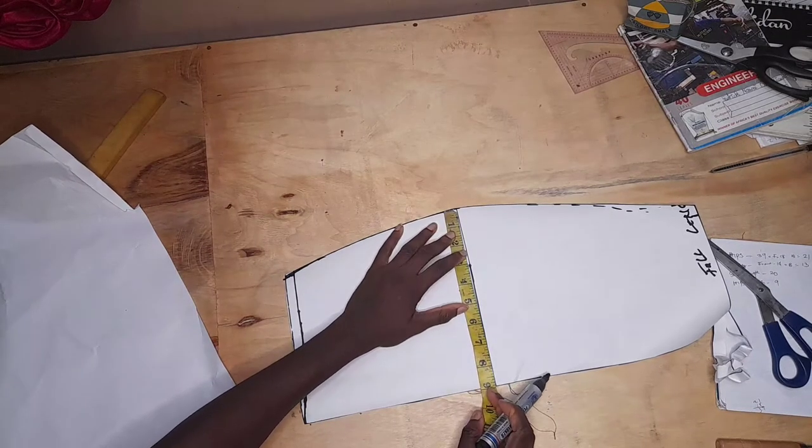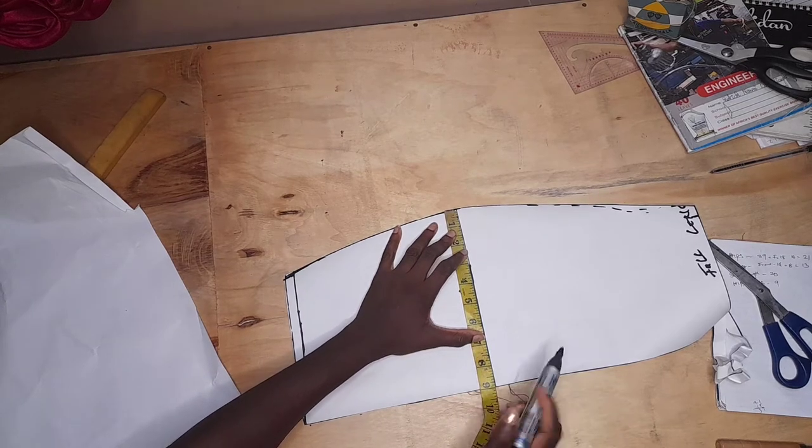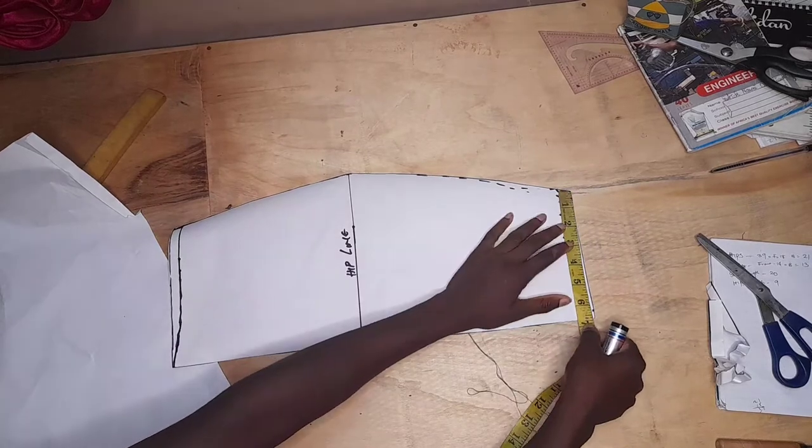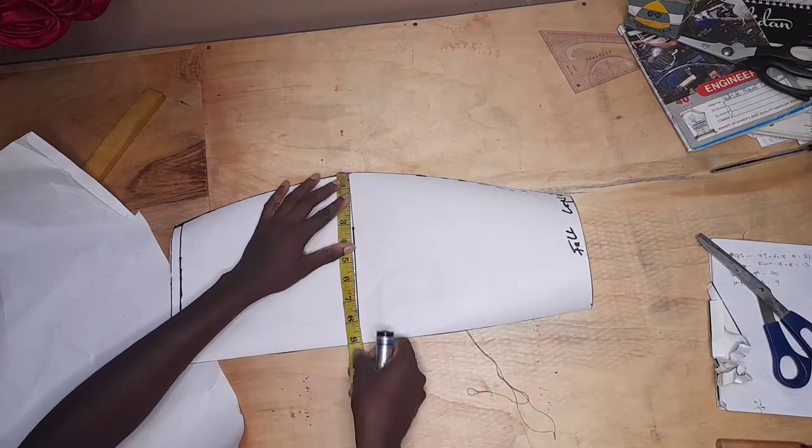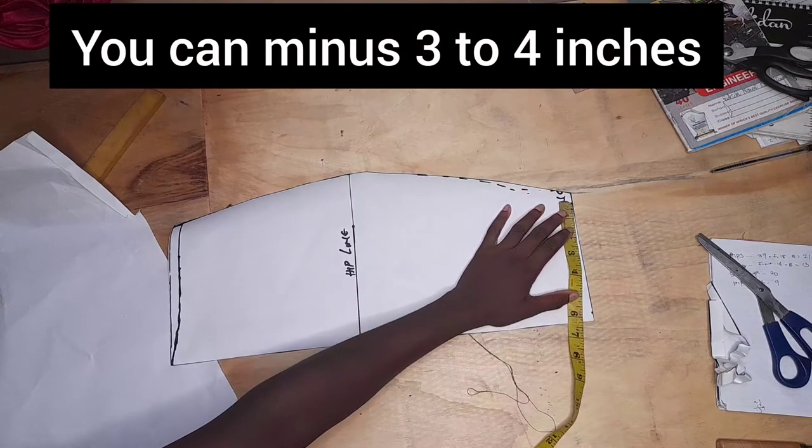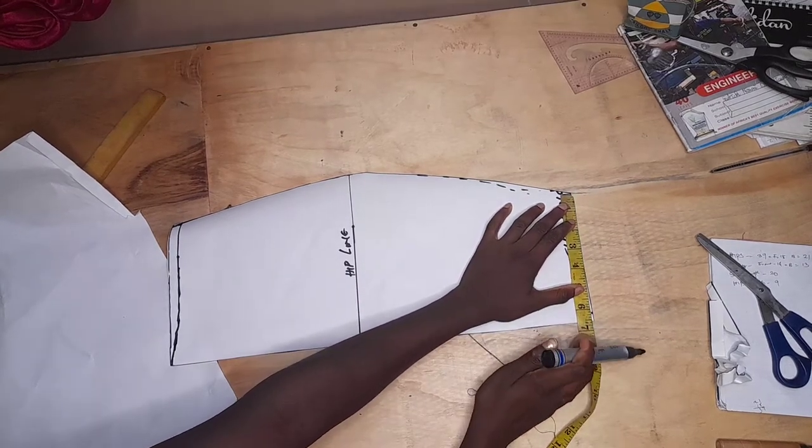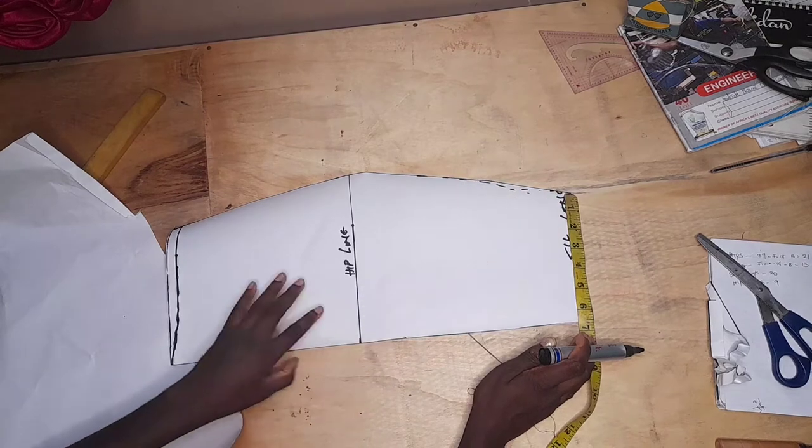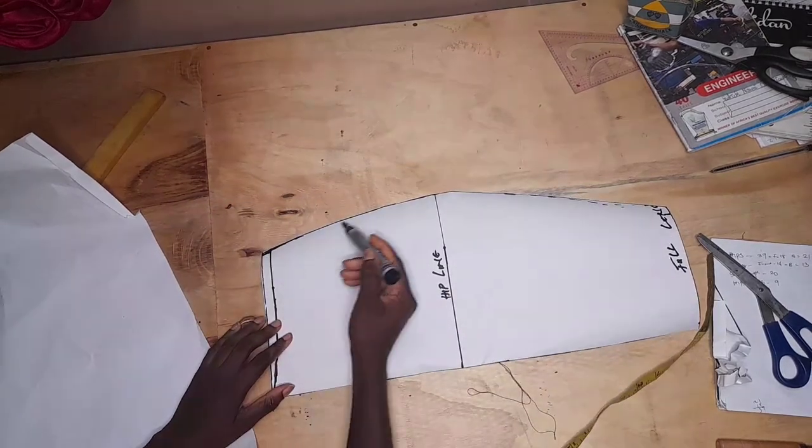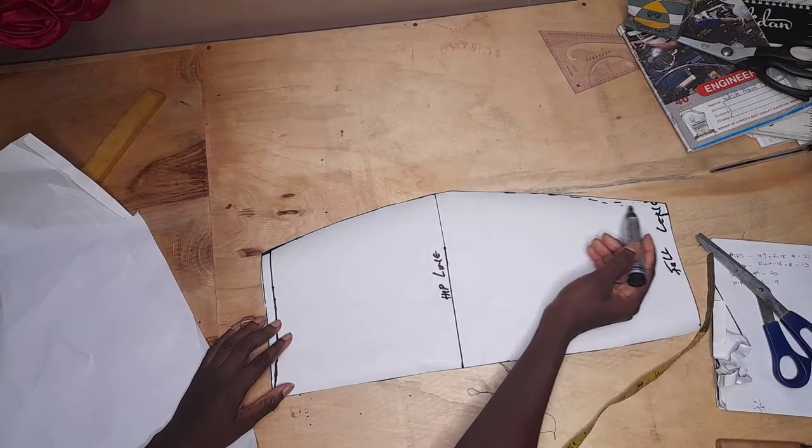For the hem measurement, I took my hip measurement minus two inches and I placed it at the full length line. So my hip measurement there is nine, so I minus two from nine which is seven. I placed seven on the hem line. I went ahead to connect it with my hip curve. If you don't have a hip curve, please just use your hand and follow the curve.